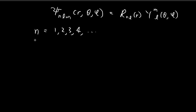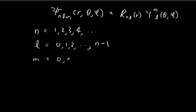l is a number that can be equal to 0, 1, 2, and it can range all the way to n minus 1. l comes from the spherical harmonics and is also related to the radial component. Then there's a third number, m, the magnetic quantum number, that can range from 0, ±1, ±2, all the way to ±l. This is a number that comes from the spherical harmonics.